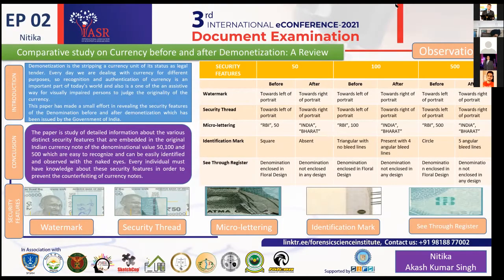The second feature is the security thread — a silver-colored, machine-readable security thread present in the 50, 100, and 500 rupee notes. The security thread is located on the front side and fully embedded on the reverse side. Before demonetization in the 50 rupee note, the security thread was located toward the left side; after demonetization it moved toward the right side of the portrait. The same change was applied to the 100 and 500 rupee notes.